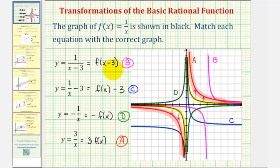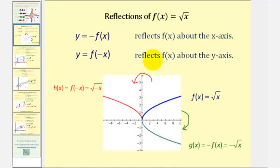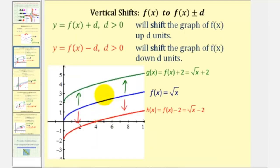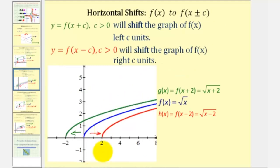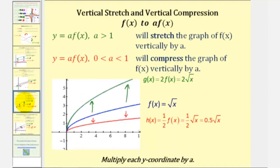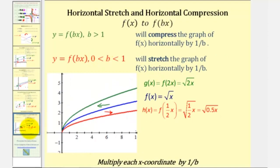With practice, if we're given a basic function and a variation of it, we should be able to recognize the type of transformation that has occurred. Here is a quick review of the basic transformations: reflections across the x and y axis, vertical shifts up or down, horizontal shifts left or right, vertical stretches or compressions, and horizontal stretches and compressions.